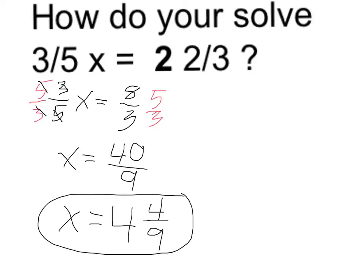Remember key steps here, we're converting my mixed number to an improper fraction, and then to take care of the fraction, to get rid of the fraction of multiplication, I multiply both sides by the reciprocal.